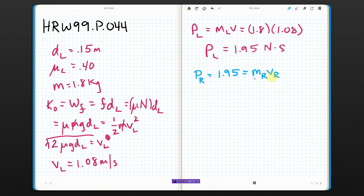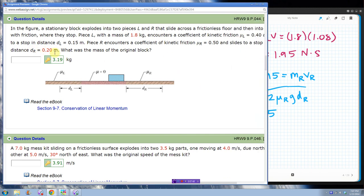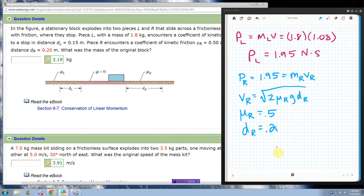So basically, velocity on the right-hand side is still 2 times, this time it's mu for the right-hand block, times g, times the distance that the right-hand block went. And if we go look at our things, for this one, the mu for the right-hand block is 0.5. And the distance the right-hand block goes in the friction area is 0.2. That's all I need. So I plug that into a calculator, and I get that the velocity of the right-hand block is 1.4.